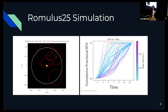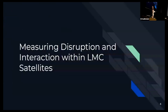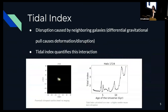Similar to Leo, I'm now measuring disruption and interaction within LMC satellites using the tidal index — potential disruption caused by neighboring galaxies from differential gravitational pull. On the left is a potentially disrupted satellite found from imaging; you can tell it's disrupted based on the elongation of the edges. On the right is the tidal index over the age of the universe. A higher tidal index means more disruption, and you can see that the tidal index significantly increases over the course of time.